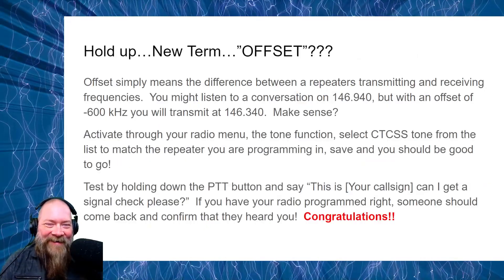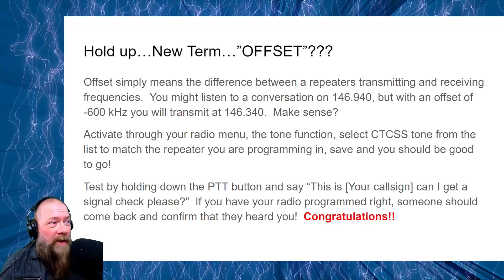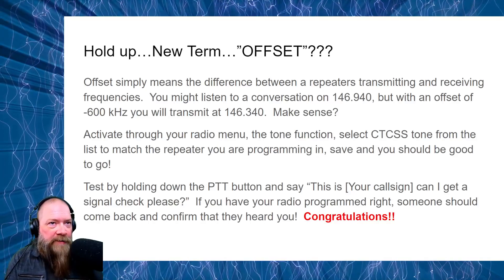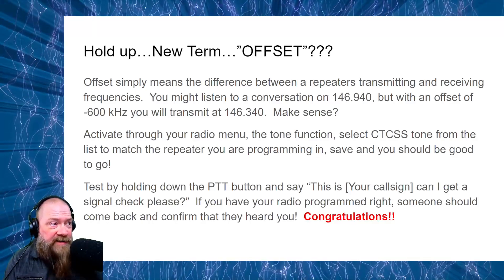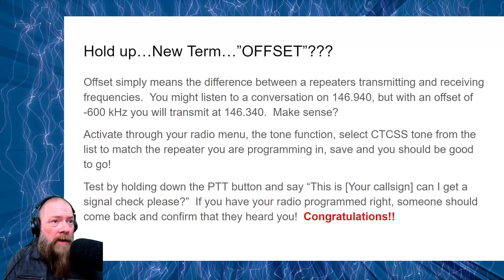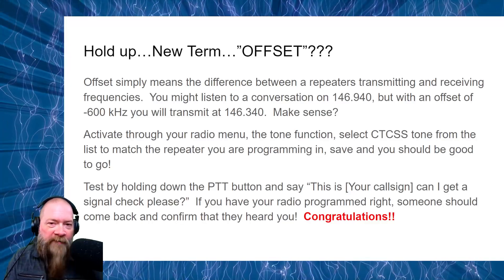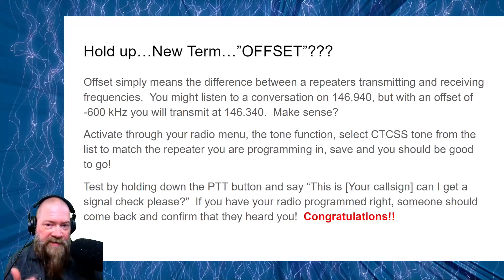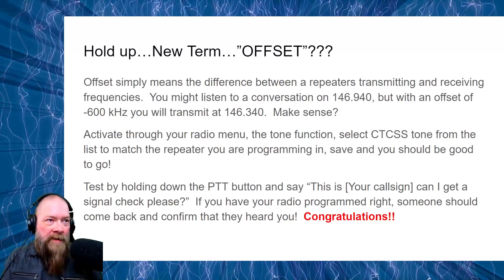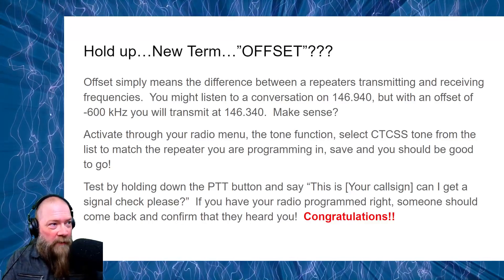Hold up — there's a new term I just introduced: offset. What the heck is offset? Offset simply means the difference between a repeater's transmitting and receiving frequencies. You might listen to a conversation on 146.940 MHz, but with an offset of negative 600 kHz, you will transmit at 146.340 when you hold down your PTT button. Simple math: 146.94 minus 0.6 is 146.34.